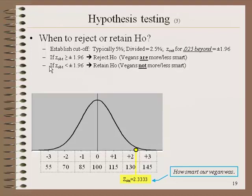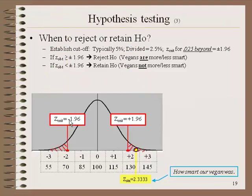We establish this cutoff: if the Z-score obtained is equal to or greater than 1.96, we'll reject the null hypothesis and say that vegans are smarter than average. If the Z-score obtained is less than 1.96 — in other words, it's inside these cutoffs — then we're going to retain the null and say vegans aren't any different in terms of intelligence. Here's 1.96 positive and 1.96 negative, and I've shaded in the area we'll call the region of rejection. If the Z-obtained falls in that region of rejection, we can reject the null hypothesis.